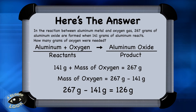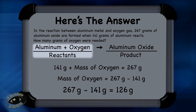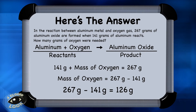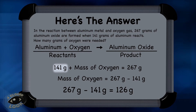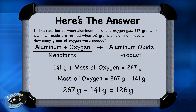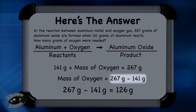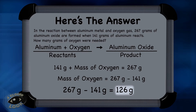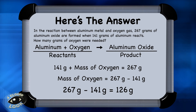Here's the answer to the problem. The aluminum and oxygen are the reactants, which combine to form aluminum oxide, which is the product. You take the 141 grams, which is the mass of aluminum, and when you add that to the mass of oxygen, it should equal 267. Rearrange the equation for the mass of oxygen by subtracting 141 from 267, and you find that the mass of oxygen in the reaction was 126 grams. The number of atoms in the reactants and the products are the same, so this calculation fits the law of the conservation of matter.